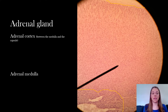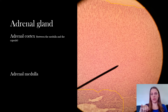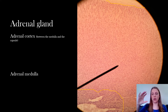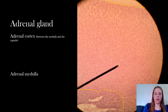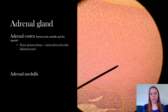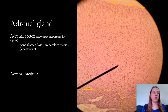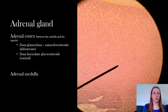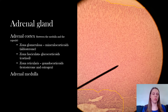The adrenal cortex is everything in between the medulla and the capsule. That line I've drawn at the top — everything above that is the adrenal capsule, which is just a protective covering on the outside. The adrenal cortex has three layers: the zona glomerulosa, which produces mineralocorticoids; the zona fasciculata, which produces glucocorticoids; and the zona reticularis, which produces gonadocorticoids.